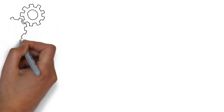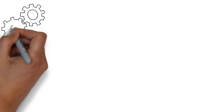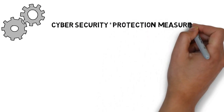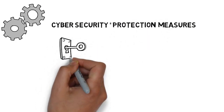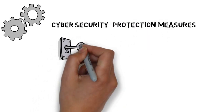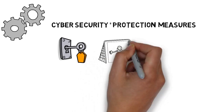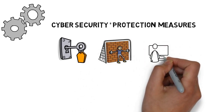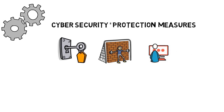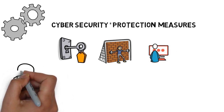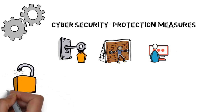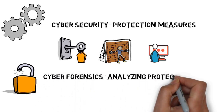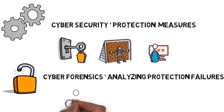Cyber security looks at protection to stop potential threats — like protecting against information being stolen using security controls such as firewalls and sophisticated monitoring systems to check for weaknesses in the protective measures, fixing these before hackers get a chance to exploit them. Cyber forensics looks at the failures in the cyber security protective measures when these measures fail to protect.